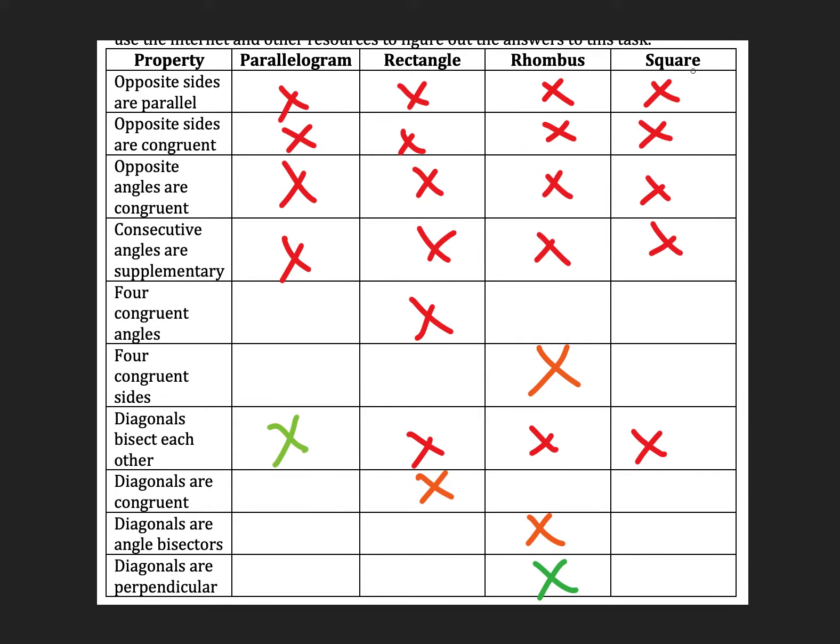Now, a square is a special parallelogram because it's a rectangle and rhombus. It's both pieces. So if it's true for rectangle or rhombus, we mark it off in square, and that means the square has all of these properties. So you can copy this down if you didn't do it yet, but those are all the properties that we're going to use for the next part of the assignment.